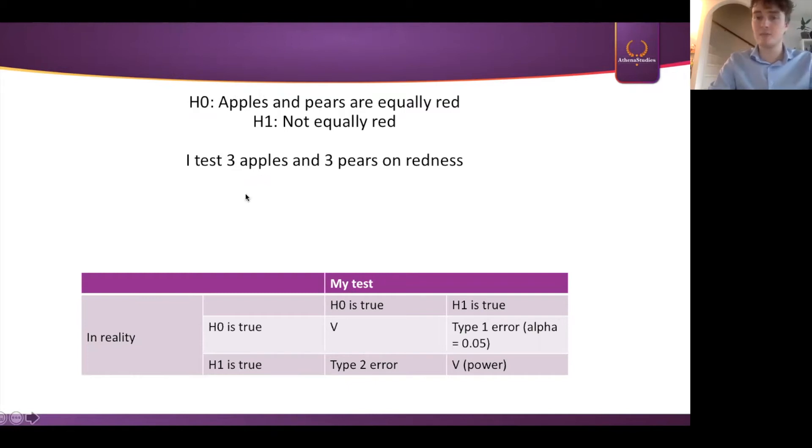So we have my test, which is this, and we have reality. So it could be that my test says that H0 is true. So it says that apples and pears are equally red. My test says that. And in fact, it could be that in reality this is the case. Well, nothing wrong here. Hooray us. You did a good job.